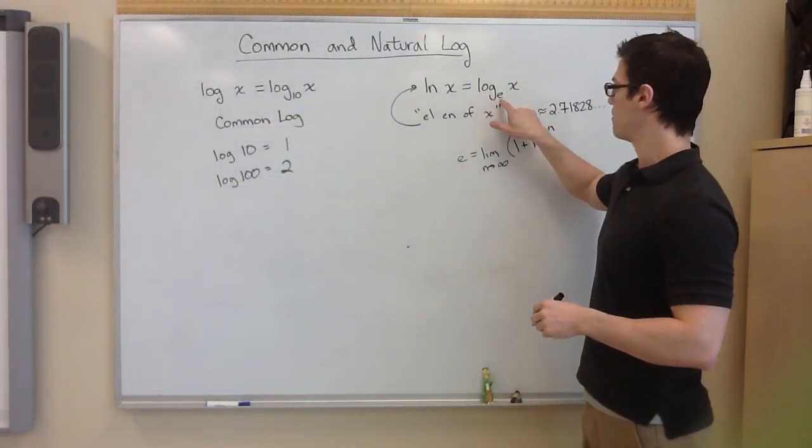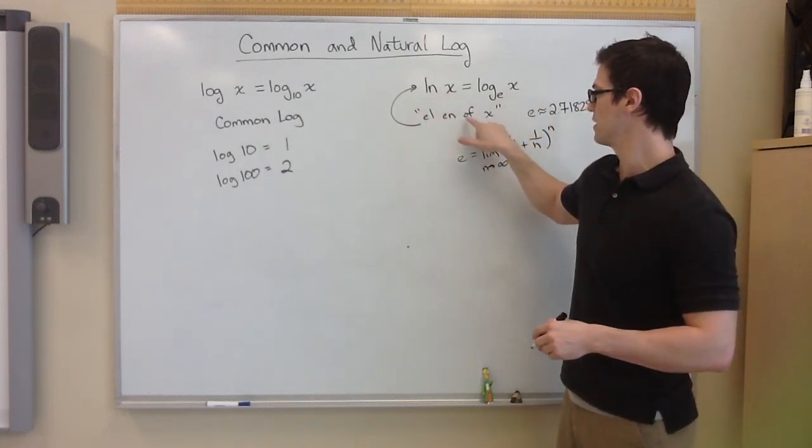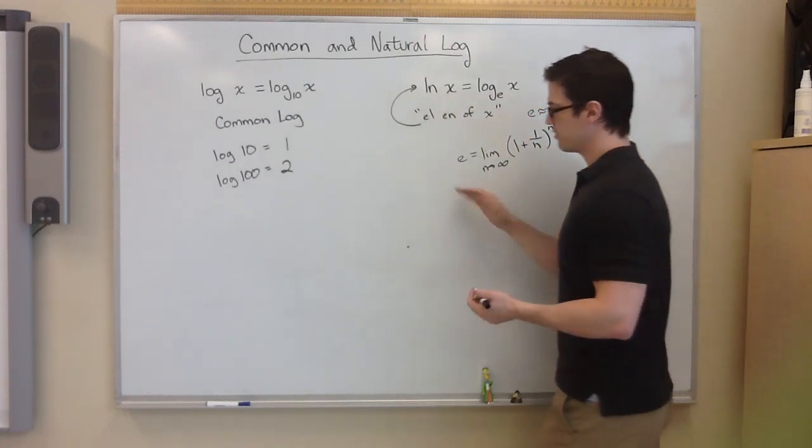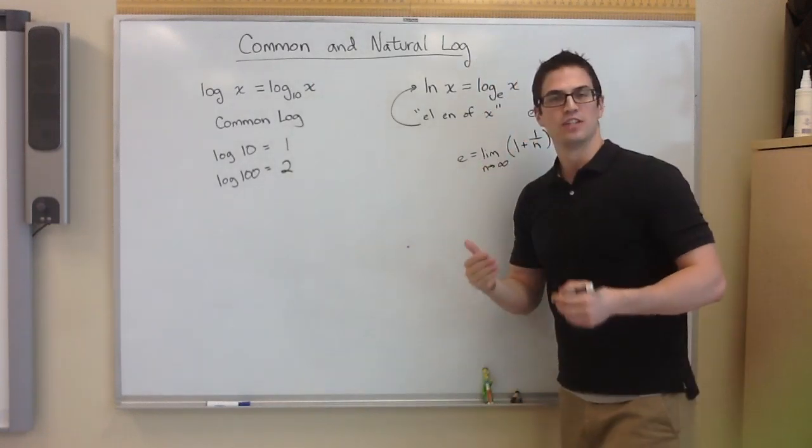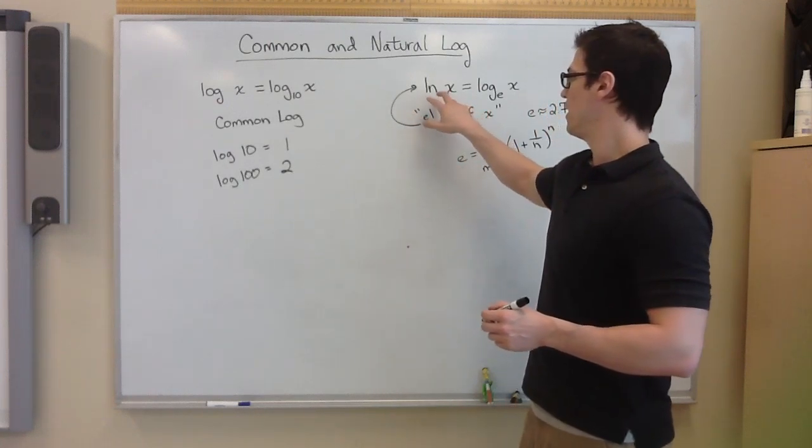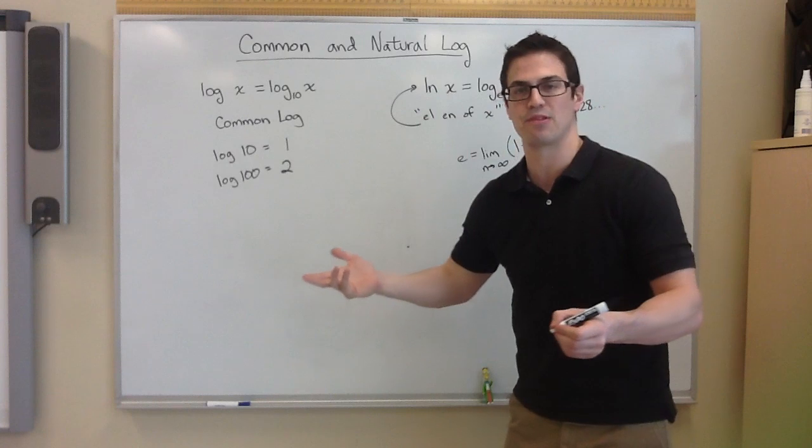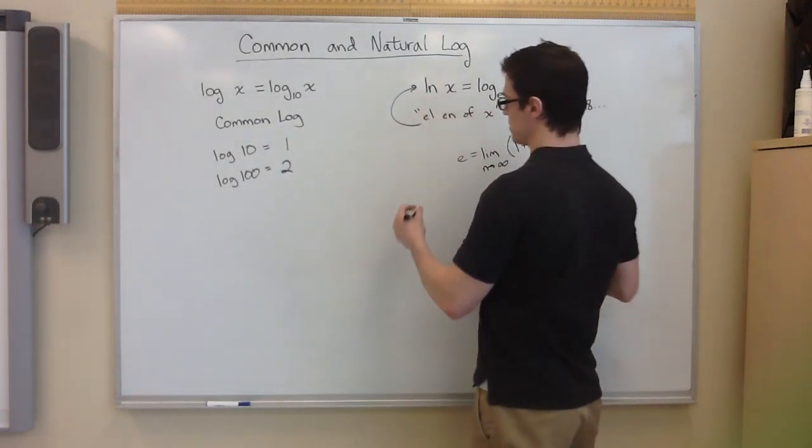So the log base e of x is equal to ln of x. Again, like I wrote right here. So you'll see problems that involve e. To get rid of it, you're going to need to use the ln function. You could use the log base e if you want to. It's the same thing. But this is what mathematicians usually use.